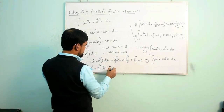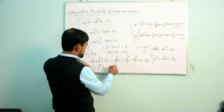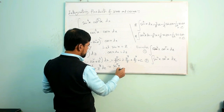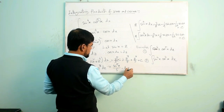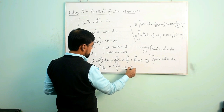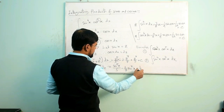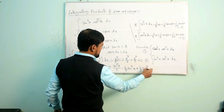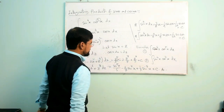Now substituting back z = sin x, the final answer is sin⁵x/5 − (2/7)sin⁷x + (1/9)sin⁹x + C.